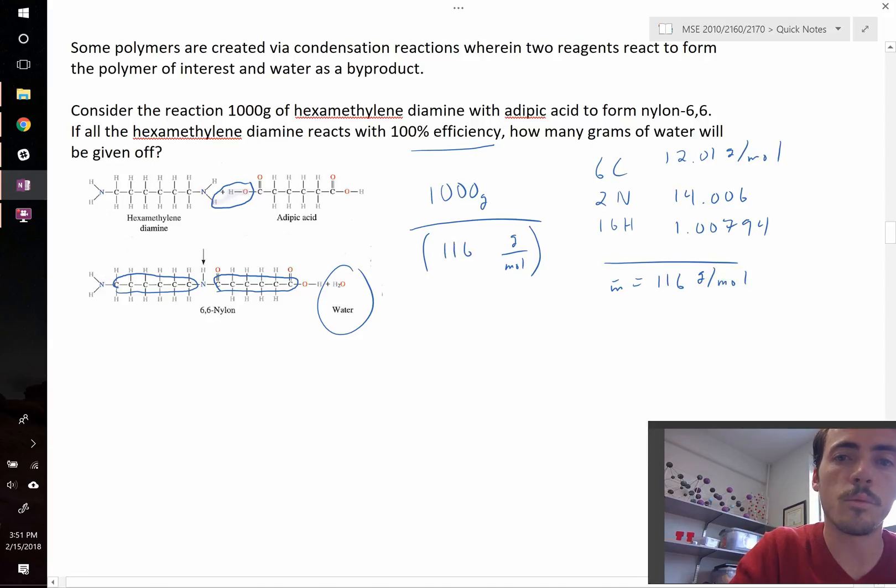So let's go ahead and plug in 116 grams per mole. This means that we have 8.62 moles of our hexamethylene diamine to start with.